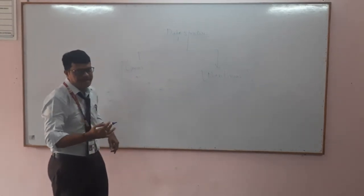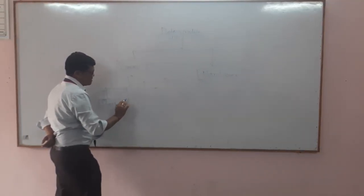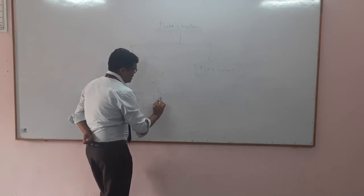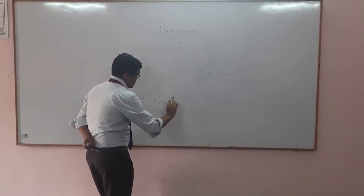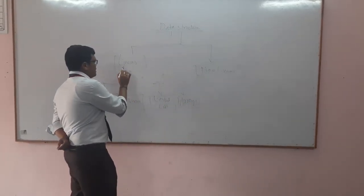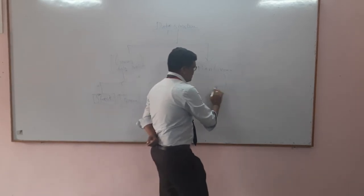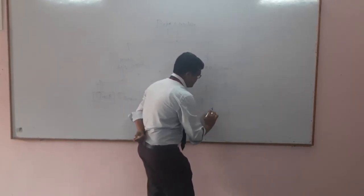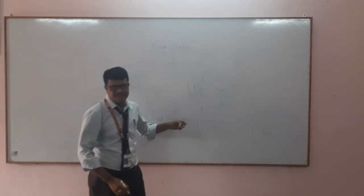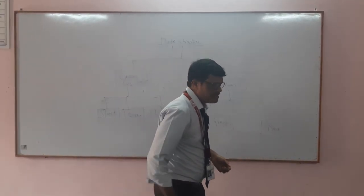Again, this linear data structure is classified into different types. The very first one is called a stack. The second one is called a queue. The third one is called a linked list. And the fourth one is called arrays. So this is the classification of linear data structure.